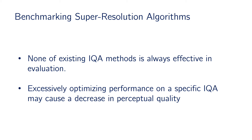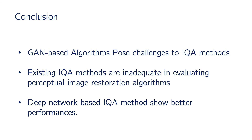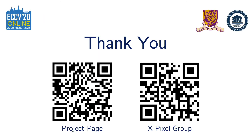This observation inspires us in two aspects. First, none of the existing IQA methods is always effective in evaluation; with the development of image restoration technology, new IQA methods need to be proposed accordingly. Second, excessively optimizing performance on a specific IQA metric may cause a decrease in perceptual quality. In conclusion, our work indicates that GAN-based algorithms pose challenges to existing IQA methods, and these IQA methods are inadequate in evaluating perceptual image restoration algorithms. Among them, deep network-based IQA methods show better performance. For more information and details, please check our project page and group page.